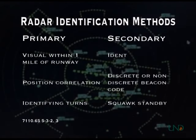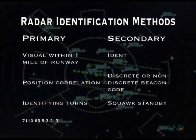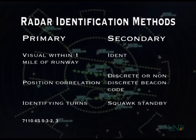There are six methods that can be used to radar identify a target. These six methods are divided into two groups: three methods are used for primary-only targets, and three are used for targets displaying secondary information. We'll begin with the primary radar identification methods.